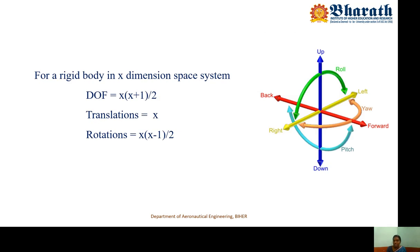Just see this figure. This is a gimbal, and consider forward and backward — this red line indicates the x-axis. Left and right — yellow indicates the y-axis. Up and down — the blue color indicates the z-axis. So the airplane is allowed to move forward and backward, left and right, and up and down, giving 3 translational motions for a rigid body. Similarly, the object in space has 3 rotational motions: pitch, yaw, and roll.